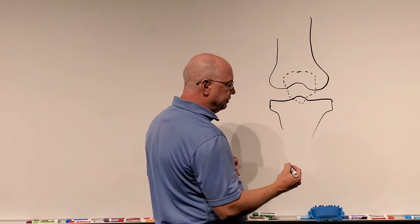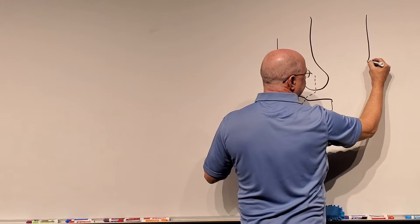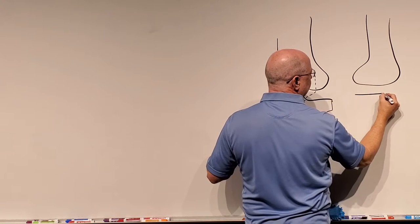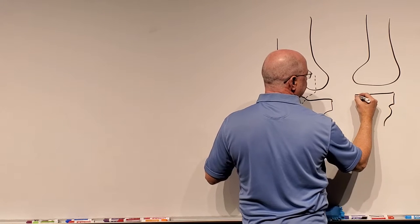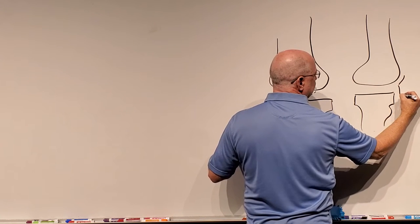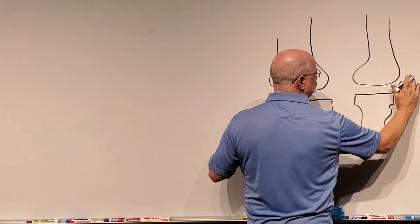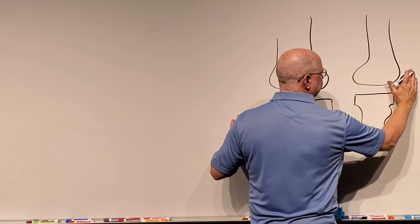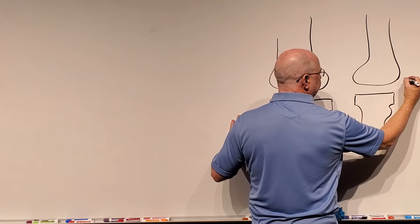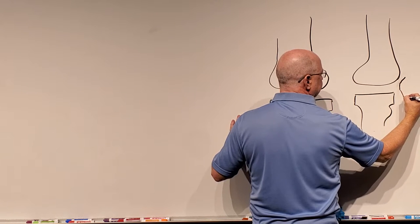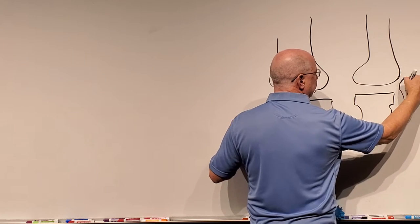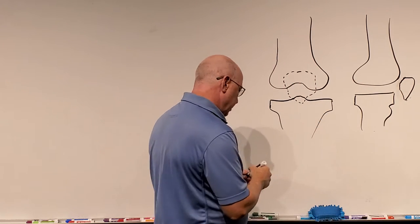Now sitting in front of all of this would be your patella. If I drew this from a lateral view, I would have the distal femur do this, the proximal tibia does this, and your patella would sit here something like this. We have the base and the apex.